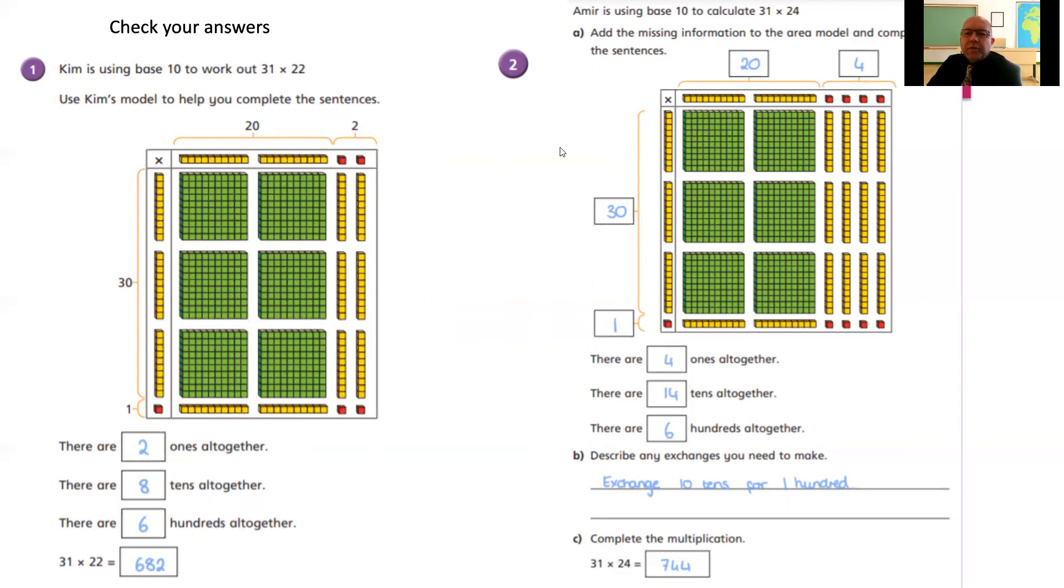And for this one, the missing numbers, we can see that there are 2 tens in this frame here. So that's 20. And there are 4 ones in the frame here. So that's 4. And then down this side, 10, 20, 30 in tens, and 1 in ones. The 30 and 1. All together, I can see that there's 1, 2, 3, 4 ones. There's 1, 2, 3, 4, 5, 6, 7, 8, 9, 10, 11, 12, 13, 14 tens. And there's 1, 2, 3, 4, 5, 6 hundreds. So the exchange you can make is you can exchange 10 tens to make 1 extra 100. So 1, 2, 3, 4, 5, 6, 7, 8, 9, 10. Those 10 tens will make another 100. Which means all together, we have got 744. Give yourself a tick, and well done if you got that one.